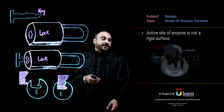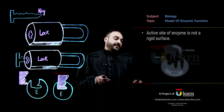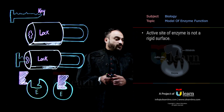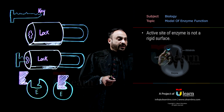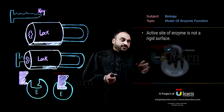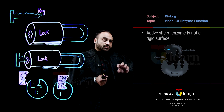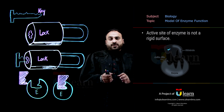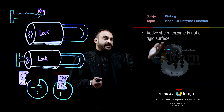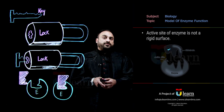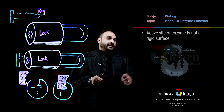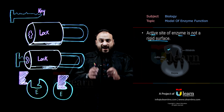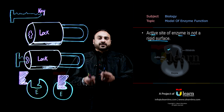इस diagram को देखें तो यहاँ पर enzyme है और इस enzyme की जो active site है, जब उस पर substrate आकर attach होगा, तो यह substrate enzyme की उस active site के अंदर कुछ slight modification create करेगा, जिसकी वजह سے یہاں پر enzyme substrate complex بنے گا اور enzyme اس substrate کو product میں transform کر دے گا. So according to this model, active site of enzyme is not a rigid surface - it can show flexibility towards the appropriate substrate.